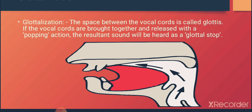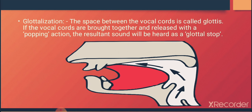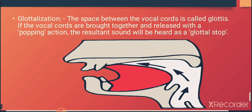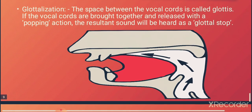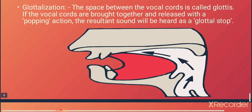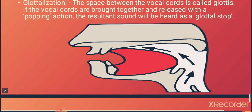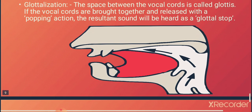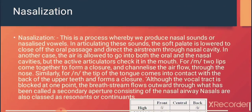Glottalization refers to sounds produced at the glottal area. You can see here the area called the glottis, shown with the help of arrows. The space between the vocal cords is called the glottis. If the vocal cords are brought together and released with a popping action, the resultant sound is categorized as a glottal stop.